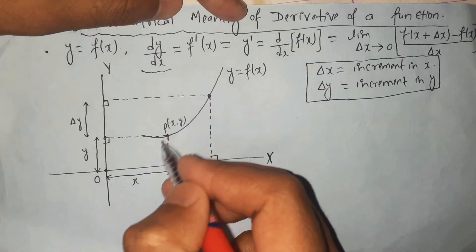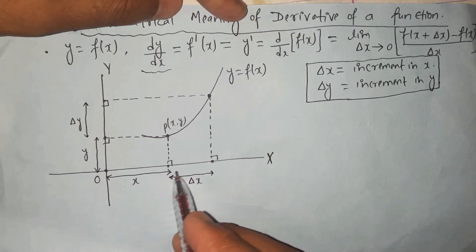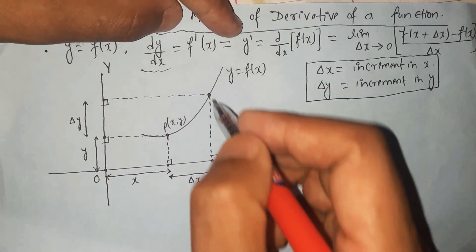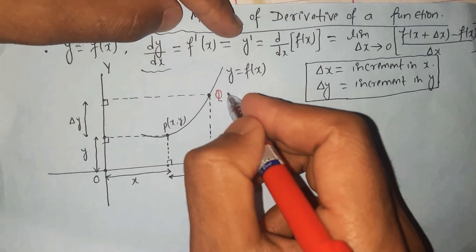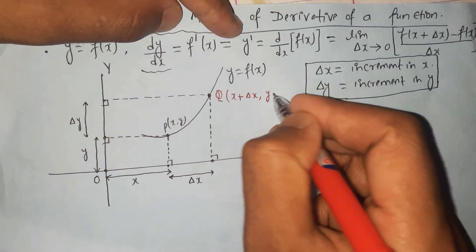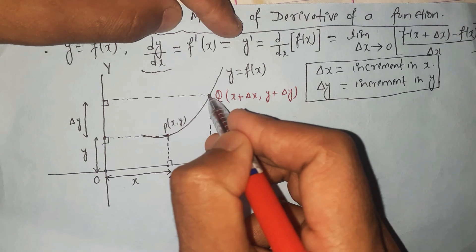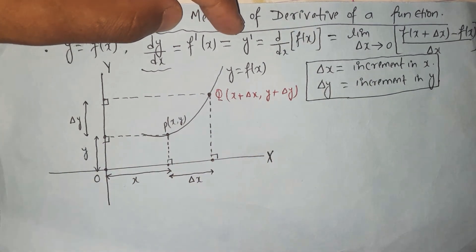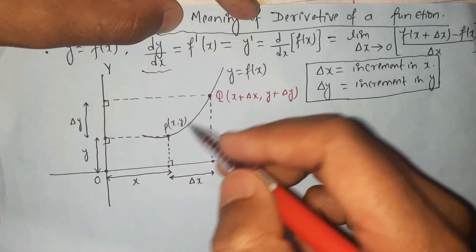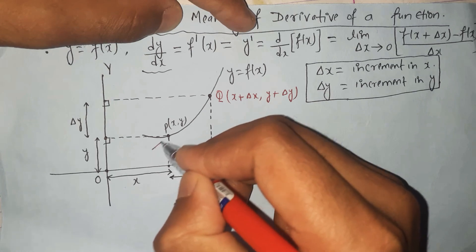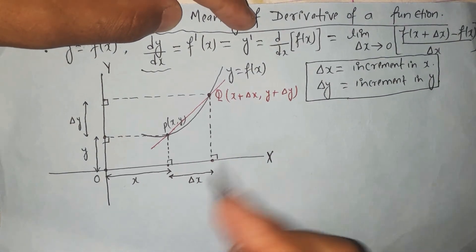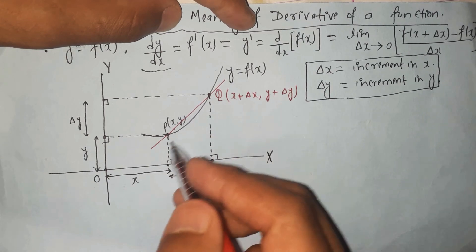We first take a point P with coordinates (x, y), then we increment the abscissa by delta x and the ordinate by delta y. Here we get the neighboring point — let's call this point Q. It has the horizontal coordinate x plus delta x and the vertical coordinate y plus delta y. This Q is the neighboring point of the original point P. Let's join the points P and Q — the secant PQ is formed here.